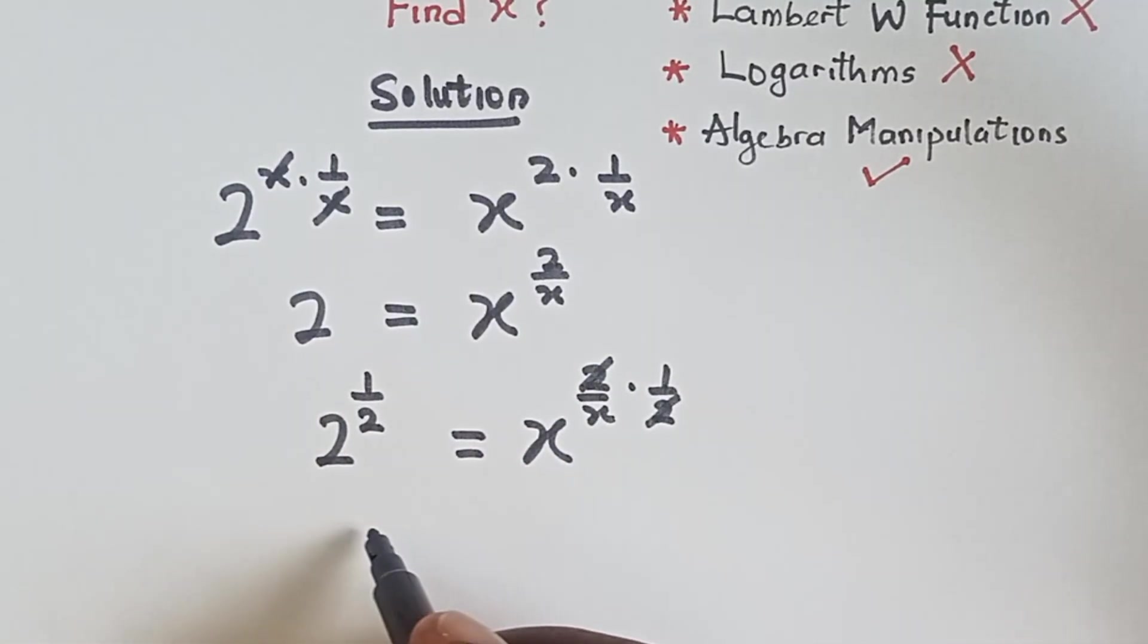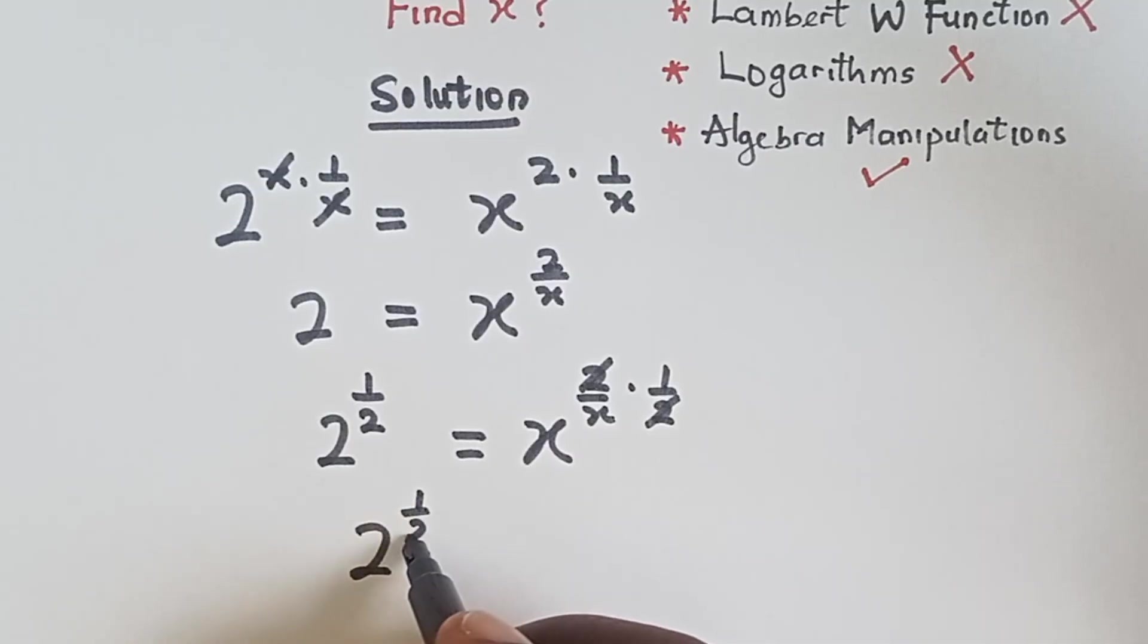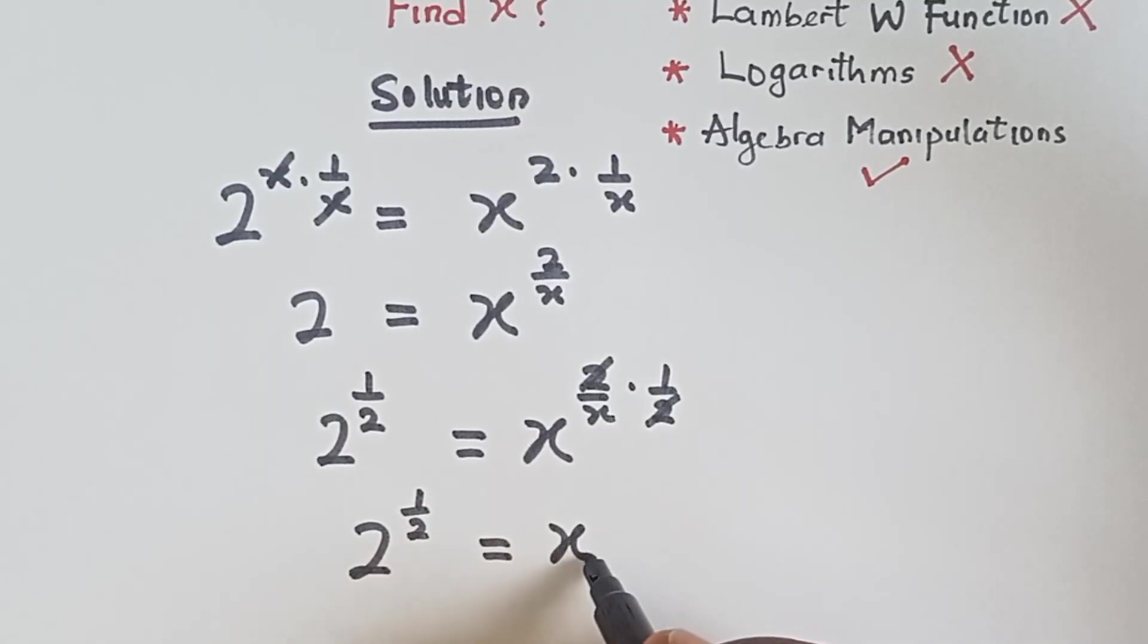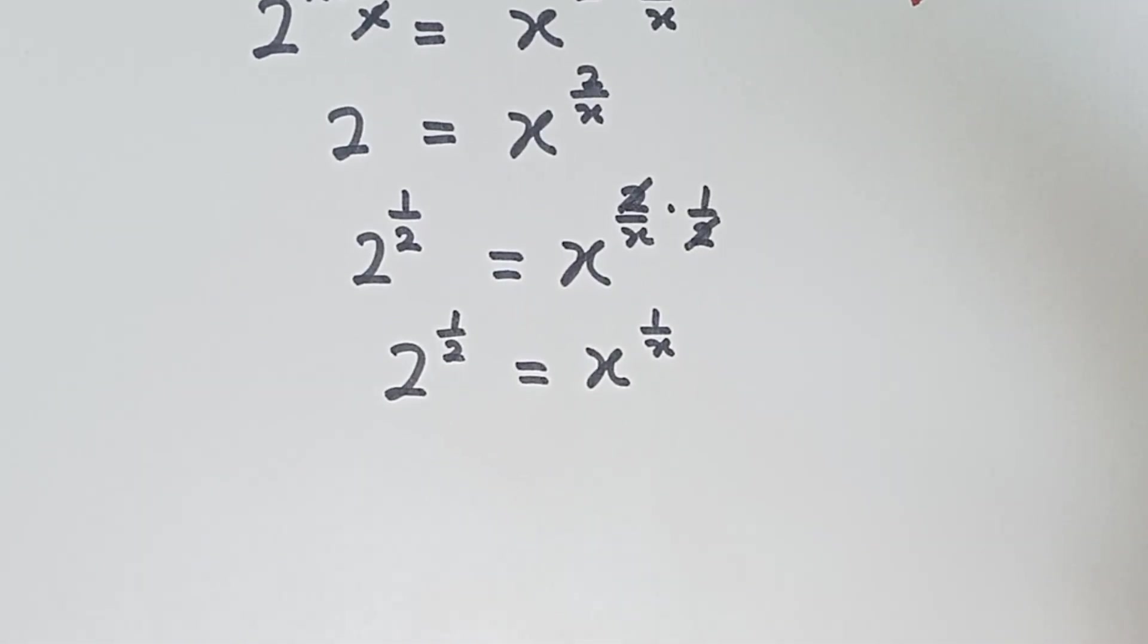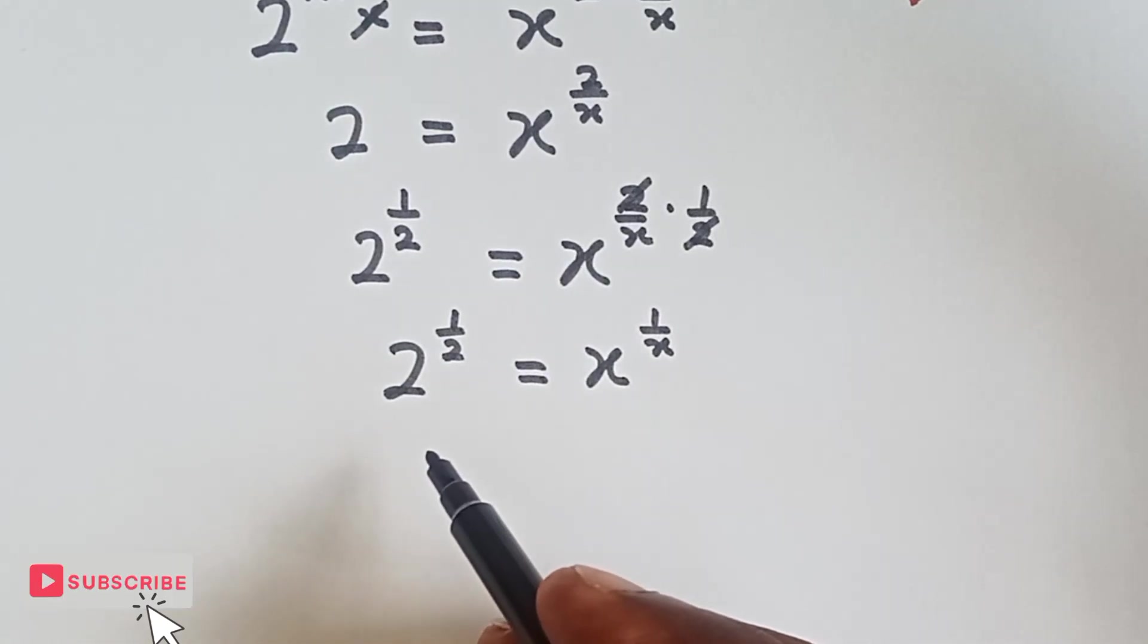This 2 cancel this 2, then we have 2 raised to the power 1 over 2 equals to x raised to the power 1 over x. That is what we have here. Alright, now we can equate the bases and the powers.